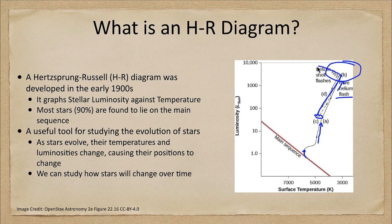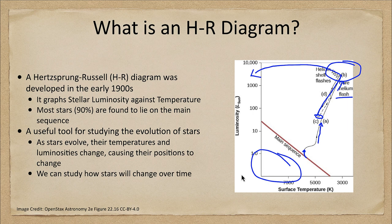Eventually the star moves off, becoming a planetary nebula, and will ultimately end up below the main sequence as a white dwarf star. This allows us to use models to study how stars evolve using tools like the HR diagram.